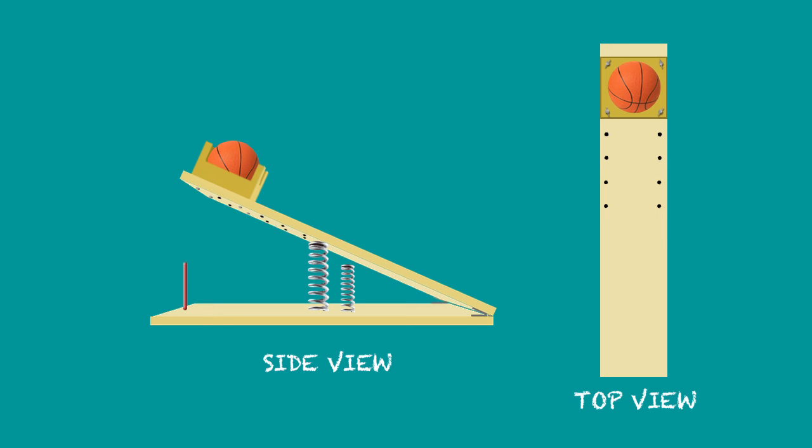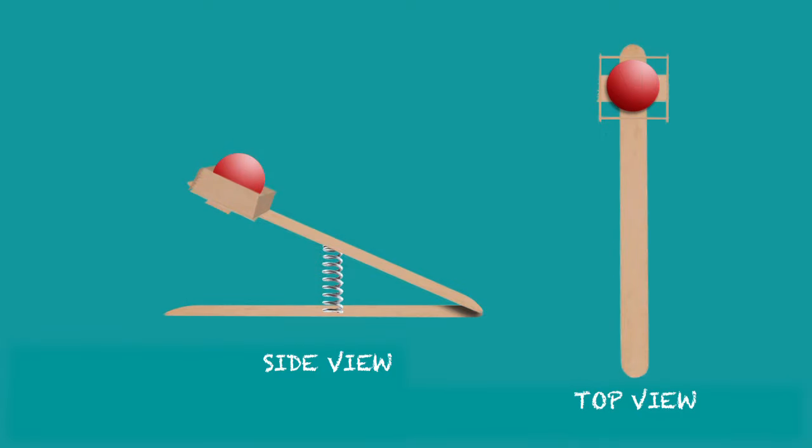Now, would you build a full-scale basketball shooter for the basketball hoop on the side of the building, or would you build a small one? That's the great thing about designs, they're scalable. You can start out by building one out of popsicle sticks at a small scale, make sure it works, make sure you like it, and then you can move on to bigger and better things with wood and larger springs.